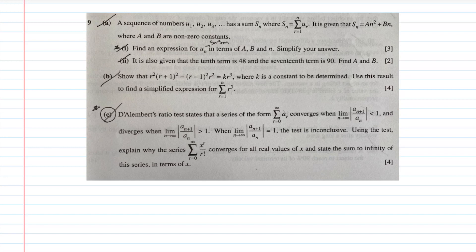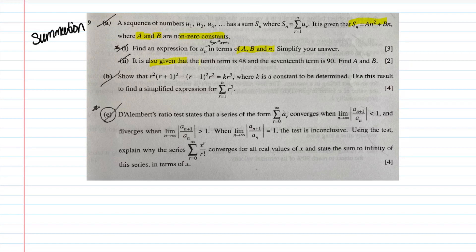Welcome back to A-Level Lessons Online. We're back with math, covering the 2017 H2 Math A-Level Paper One. I'm moving on to Question 9 today — a trickier question, but not the hardest. It's a question on summation. The question starts with a sequence u1, u2, u3 with sum Sn, where Sn equals the summation from r=1 to n of ur. It is given that Sn = an² + bn, where a and b are non-zero constants. Part a(i) asks you to find an expression for un in terms of a, b and n. Part a(ii): given that the 10th term is 48 and the 17th term is 90, find a and b.